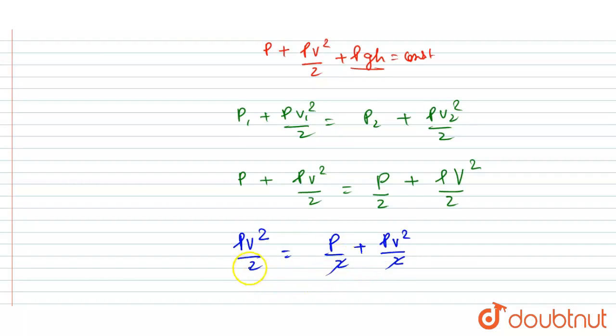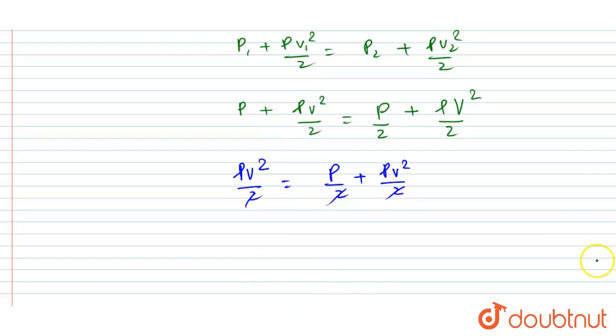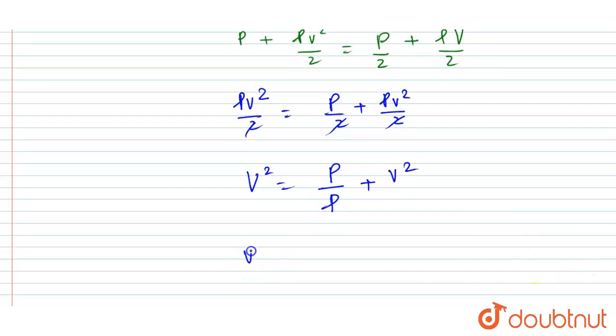If you divide the whole expression by rho, then you will get capital V square is equal to p by rho plus v square. Taking under root both sides, then you will get capital V is equals to under root of p by rho plus v square. This will be the velocity at the cross section where the pressure is p by 2.